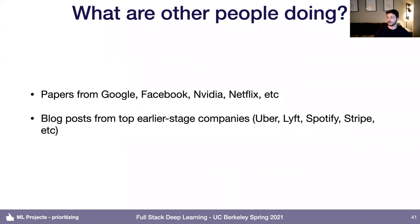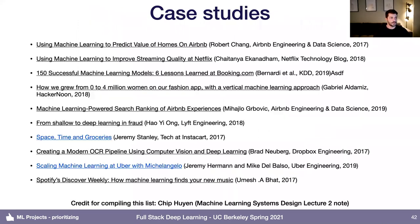You can also look at papers, though a very small percentage are actually productionized and deployed. You can look at papers from big tech companies, many of which are used in real systems. You can also look at blog posts, mostly from earlier-stage companies that aren't publishing papers but whose engineering blogs have good case studies. There's a list of ten case studies on making machine learning work in the real world at different companies that Chip Huyen compiled — I'd recommend reading through some of these to get ideas about what types of things might be useful.